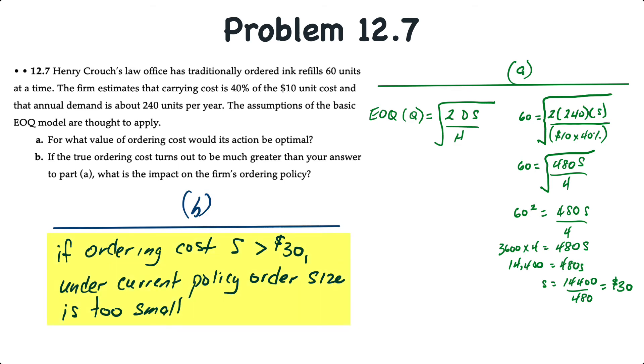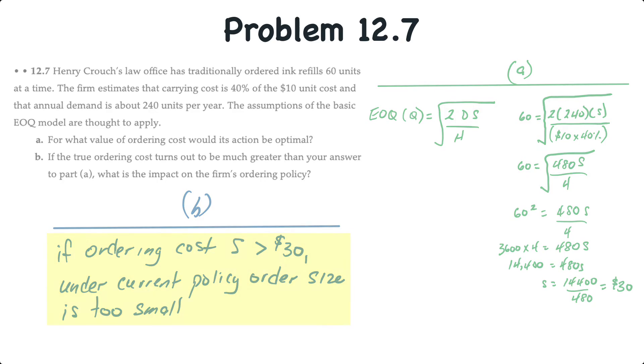So in the answer for part B, if the ordering cost is greater than $30, then under the current policy, the order size is too small. And the reason it's too small is we want to be able to spread that ordering cost over a large number of units. So if the ordering cost is larger than the $30 that's used in the EOQ model, the order size of 60 units is just simply too small. And therefore, we would not be minimizing the total cost to order and holding inventory. In this case, the ordering cost would exceed the holding cost.